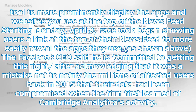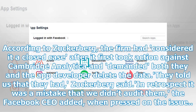Starting Monday, April 9, Facebook began showing users a link at the top of their news feed to more easily reveal the apps they use. The Facebook CEO said he is committed to getting this right, after acknowledging that it was a mistake not to notify the millions of affected users back in 2015 that their data had been compromised when the firm first learned of Cambridge Analytica's activity. According to Zuckerberg, the firm had considered it a closed case after it first took action against Cambridge Analytica and demanded both they and the app developer delete the data. "They told us that they had," Zuckerberg said, adding, "in retrospect it was a mistake that we didn't audit them."